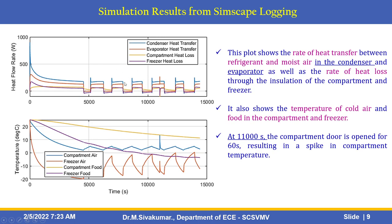It also shows the temperature of cold air and food in the compartment and freezer. At 11,000 seconds, the compartment door is open for 60 seconds, resulting in a spike in compartment temperature.